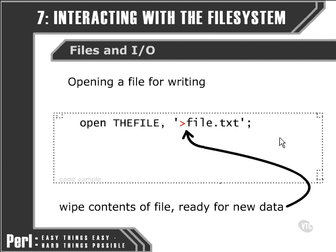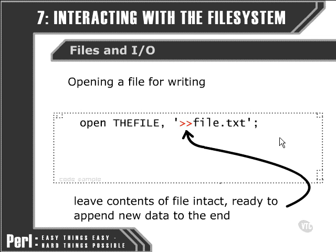Obviously, this is not something that should be done lightly if there's any chance that we'll need the data in that text file at any point later on. We don't, however, have to wipe everything out of a text file in order to write to it. We can also leave the contents of the file in place and add whatever new data we're going to add onto the end. We can do this by using two greater than signs, which tells Perl to open the file for writing but to append the contents to the end, rather than scratching out everything that's in there.